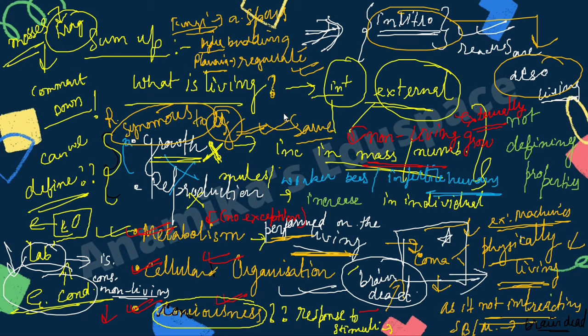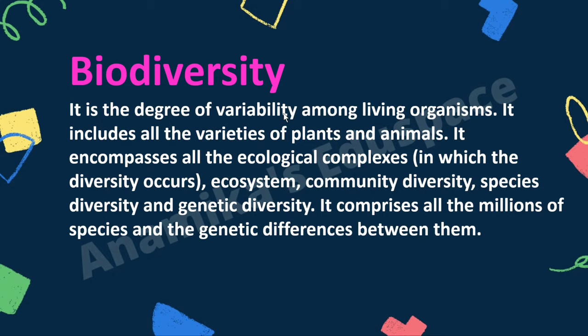Now we go to the next point — biodiversity. Bio means living, and diversity means variation. Biodiversity can be defined as any variation among living organisms calculated in a given area — that is the degree of variability among organisms.